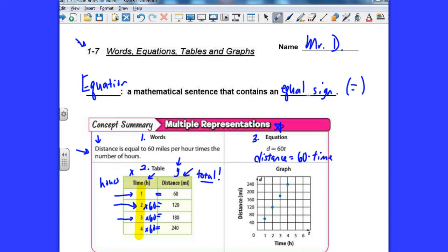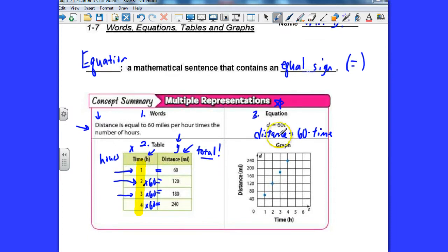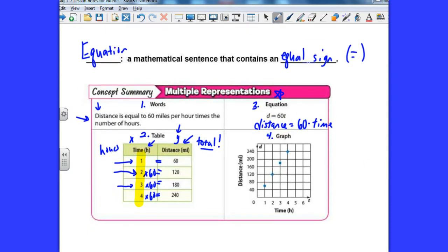So that's an equation. And then the fourth way that we could show data is to put it in a graph, which they did here. Now notice in the graph, there's several things happening here. First of all, they have their axis labeled. You need to always do that. Tell me what the axis represents. You also should have a title.